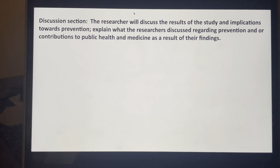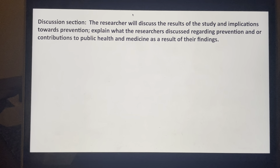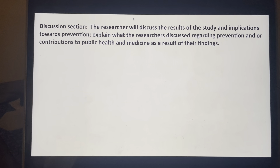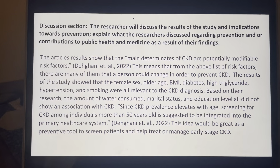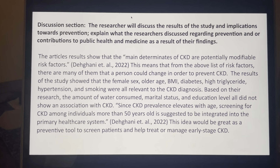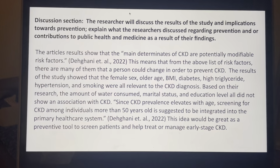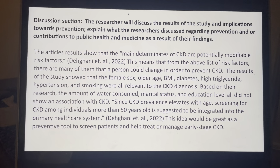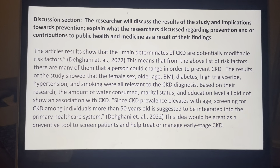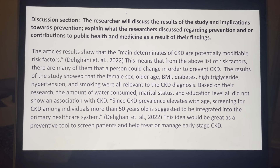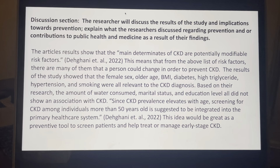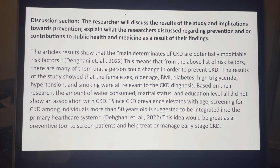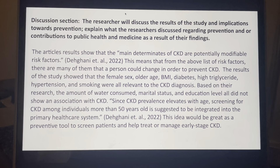For the next slide, we're going to discuss the research and the results of the study and the implications towards prevention — what the researchers discussed regarding prevention and contributions to public health and medicine as a result of their findings. The article's results show that the main determinants of CKD are potentially modifiable risk factors, from Daigani et al. 2022. This means from the above list of risk factors, there are many that a person could change in order to prevent chronic kidney disease.